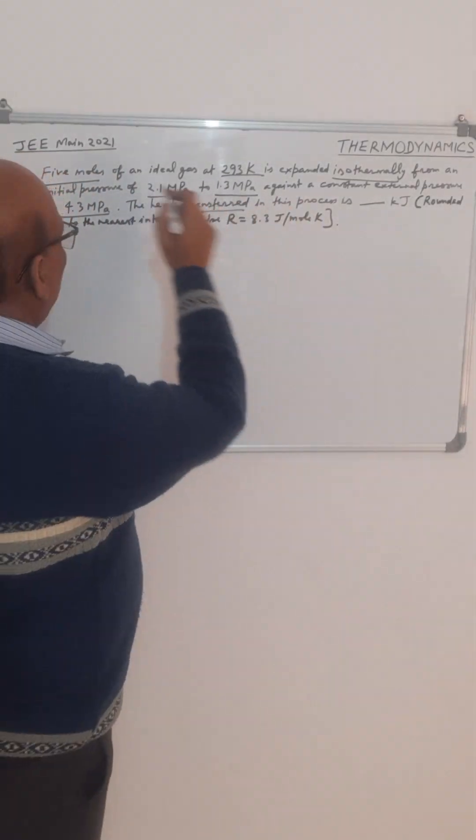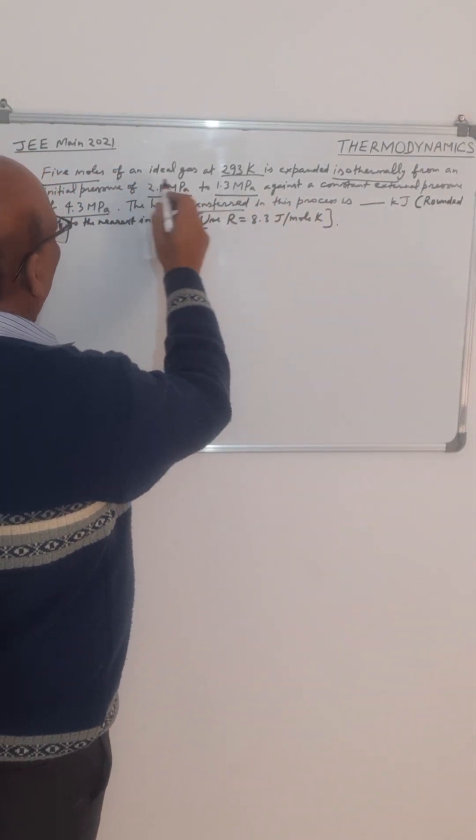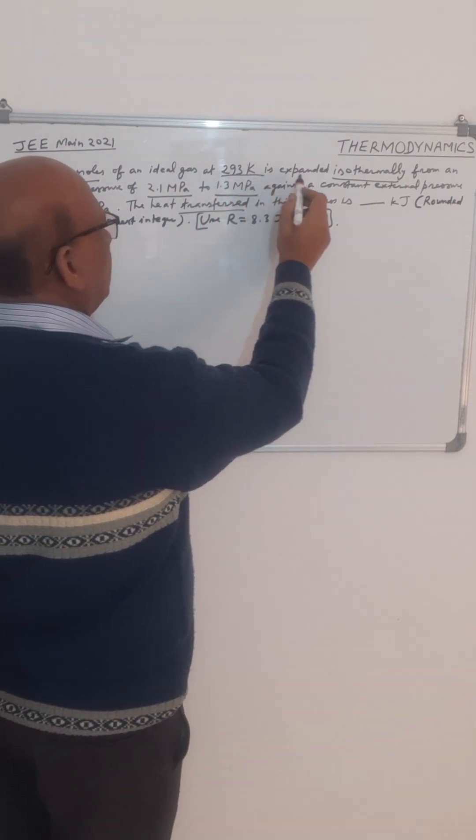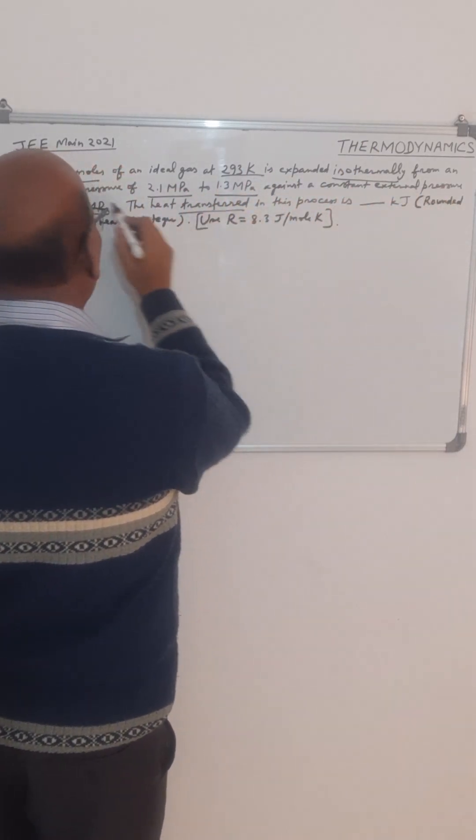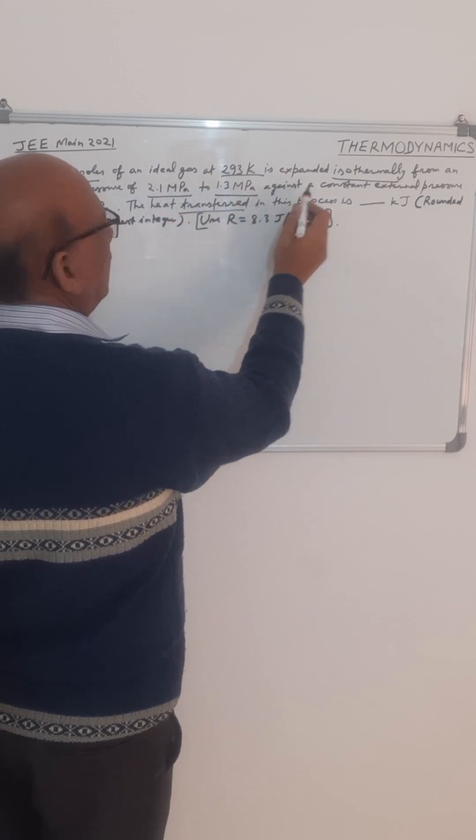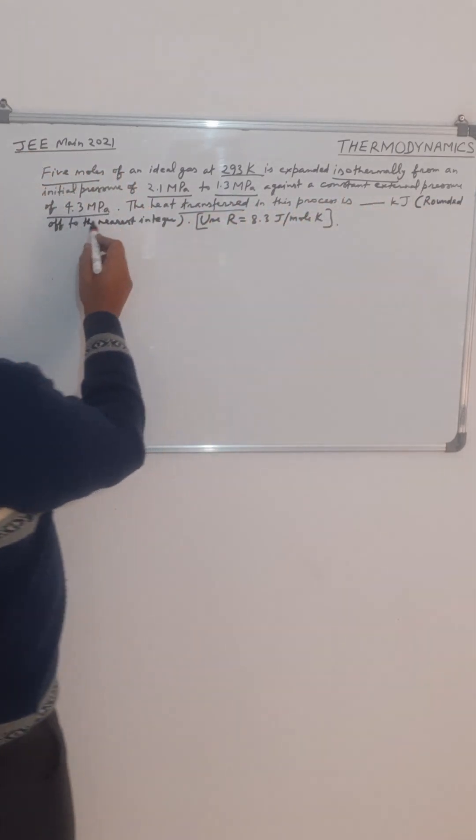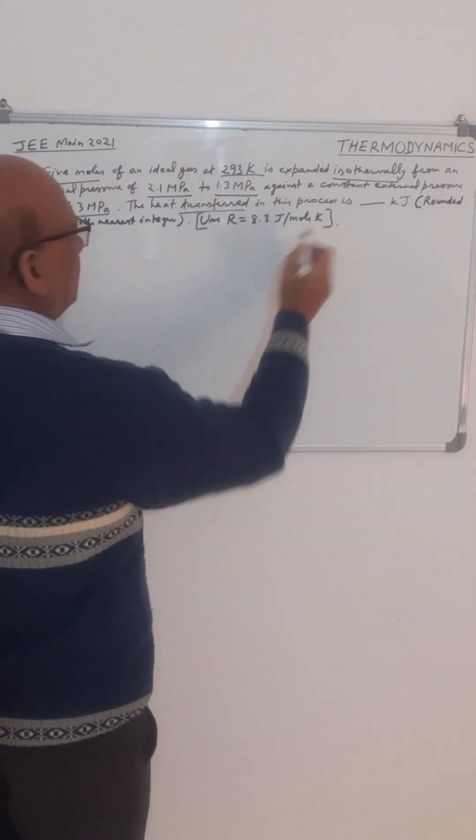This question related to thermodynamics was asked in JEE MAIN 2021. 5 moles of an ideal gas at 293 Kelvin is expanded isothermally from an initial pressure of 2.1 MPa to 1.3 MPa against a constant external pressure of 4.3 MPa. The heat transfer in this process is?